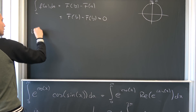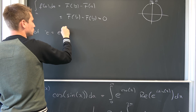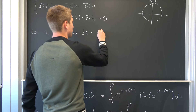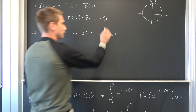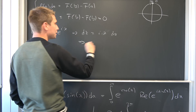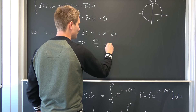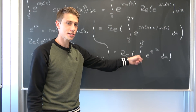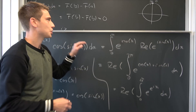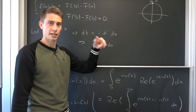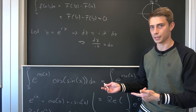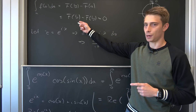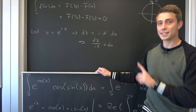If z equals e to the i times x, then dz equals i times e to the ix dx, which is i times z dx. Dividing both sides gives dz over i times z equals dx. But for the lower bound we get z equals one, and for the upper bound at two pi we get z equals one again. So we'd be integrating from one to one, which results in zero by the fundamental theorem of calculus.